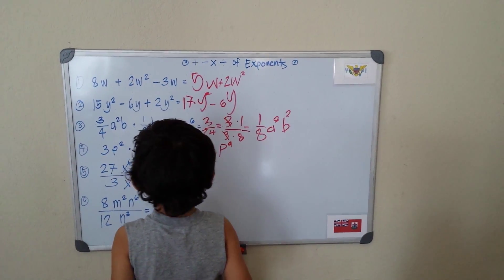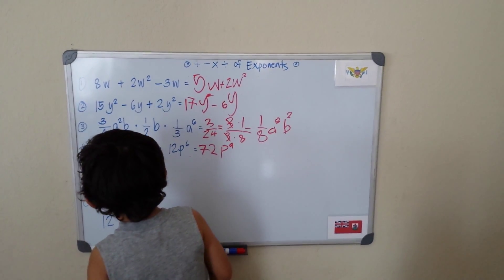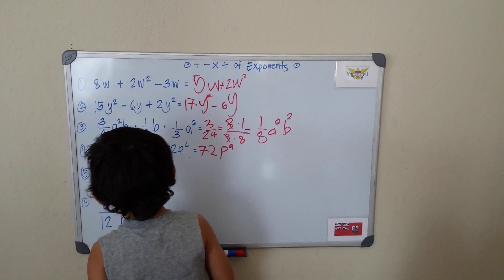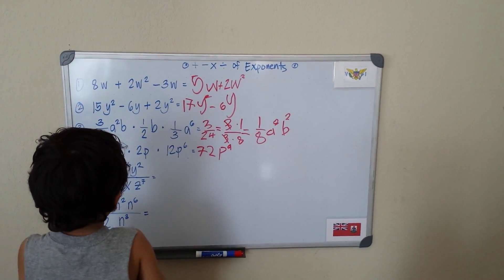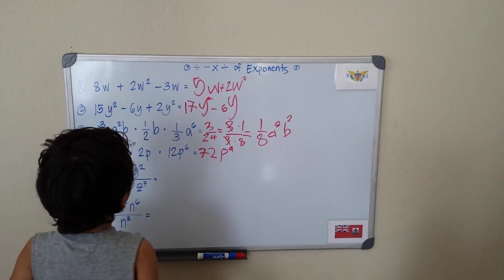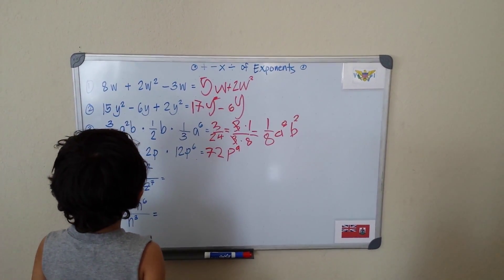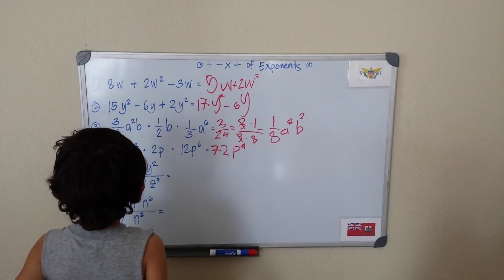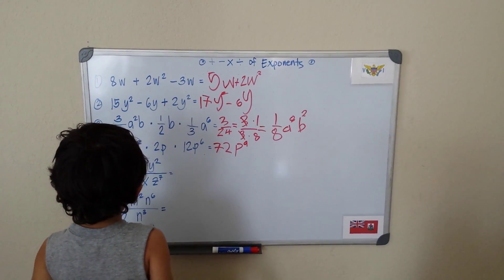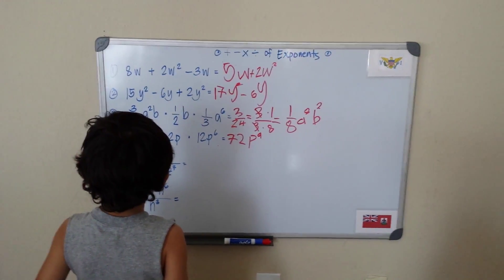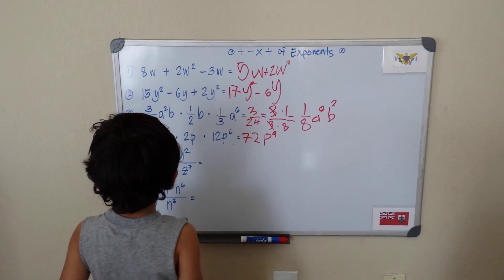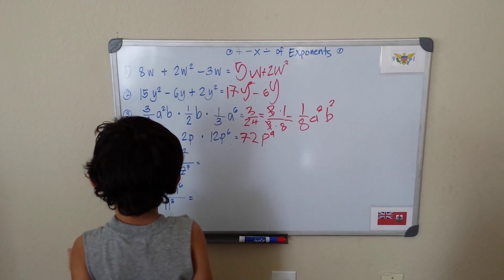I think 3 plus 6 is 9, right? 2 plus 1, 3 plus 6 is 9. So my final answer: P raised to the 9th power. Now let's stick to the 9th power, and just like that, we're going to talk about division.